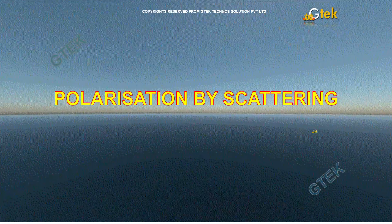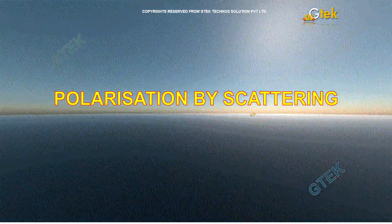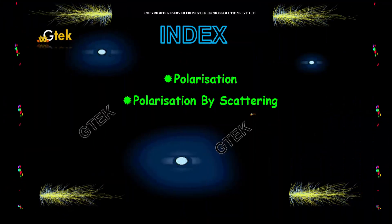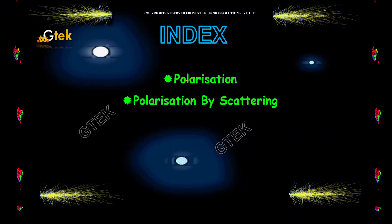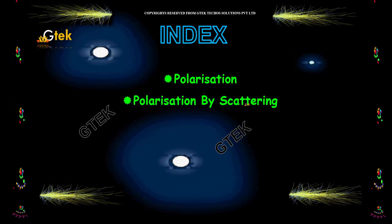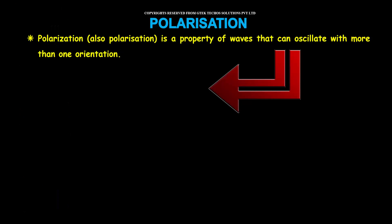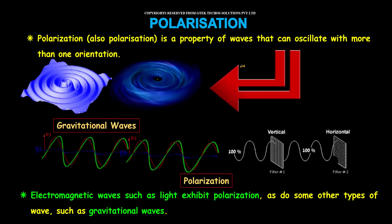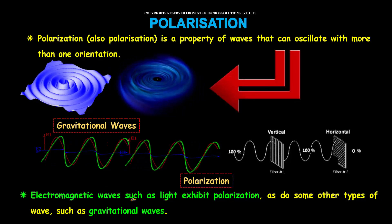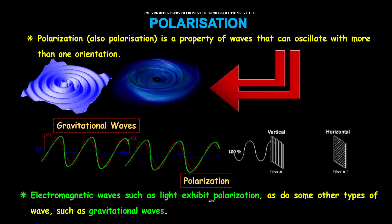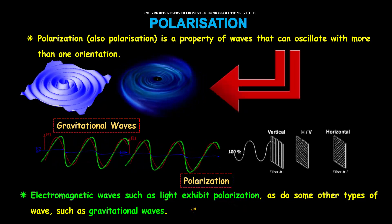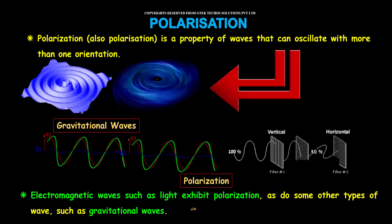Let's look into the polarization by scattering effects. I am going to talk about polarization and polarization by scattering. Polarization is a property where waves can oscillate with more than one orientation. Electromagnetic waves such as light exhibit polarization, as do some other types of waves such as gravitational waves.